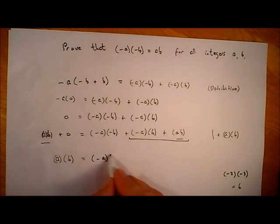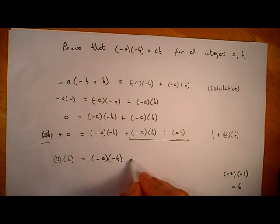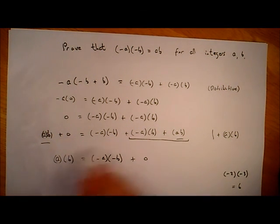So now I have minus a times minus b plus, well, this whole part is zero, plus zero. And then if I just tidy that up, I get ab. So a times b is equal to minus a times minus b.